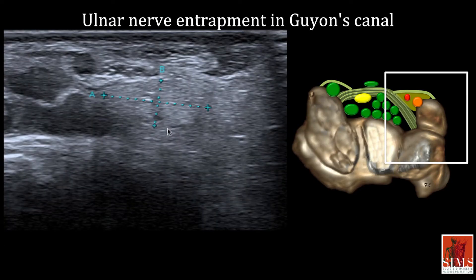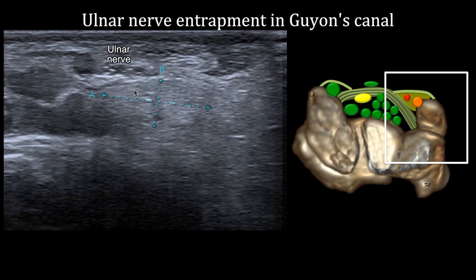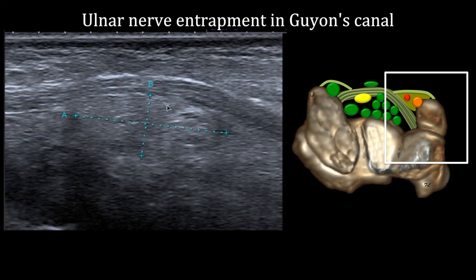Ulnar nerve entrapment in Guyon's canal should make us look for a tumour or mass. On this axial view we see a poorly defined hyperechoic structure in contact with the ulnar nerve vessels. On the sagittal view you can clearly see this oblong hyperechoic structure which lifts the ulnar nerve and corresponds to a compressive lipoma.